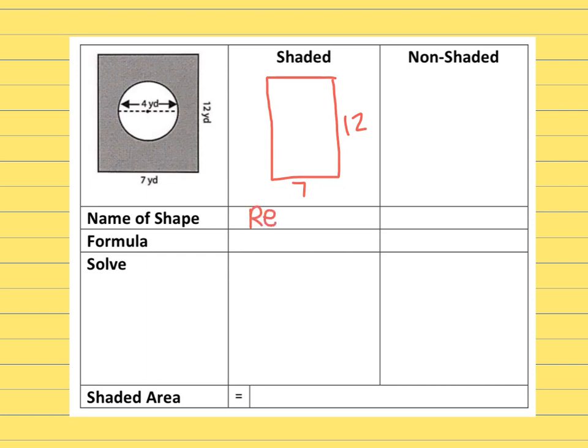So this time I'm just going to go all the way down the column. Formula for rectangle is just base times height. Seven times 12 is 84.